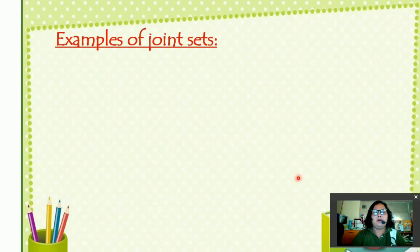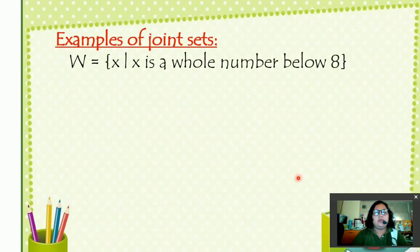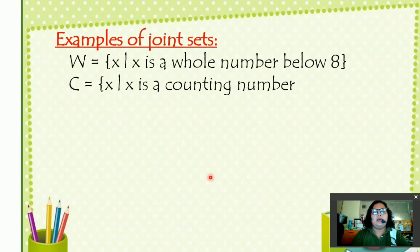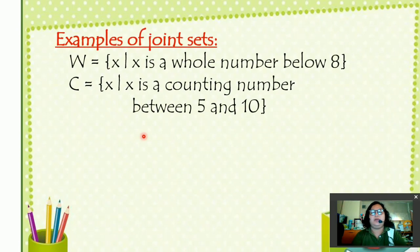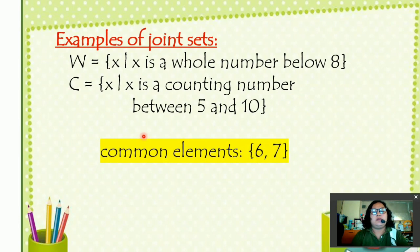Last example of joint sets. Here we have set W. It's a set of X such that X is a whole number below 8. Set C is a set of X such that X is a counting number between 5 and 10. What are the common elements? The common elements are 6 and 7.